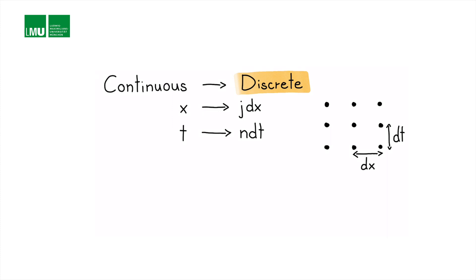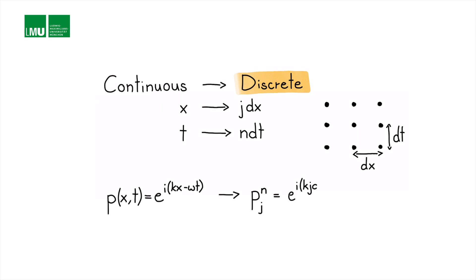We can introduce this discretization into our plane wave definition. Now p is not a function of x and t continuously, but has upper-lower indices n and j, and equals e to the i(k j dx minus omega n dt). This is our discrete definition of plane waves.